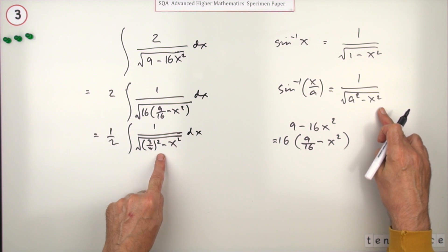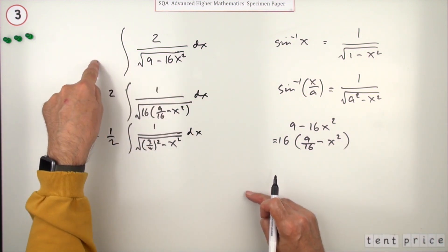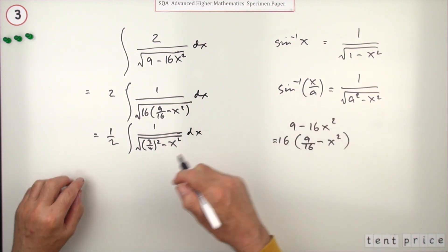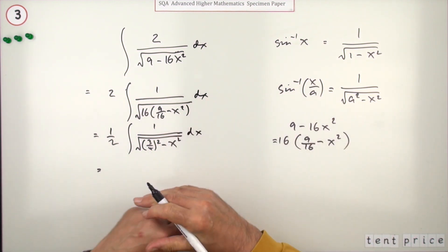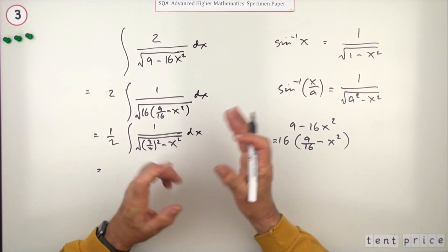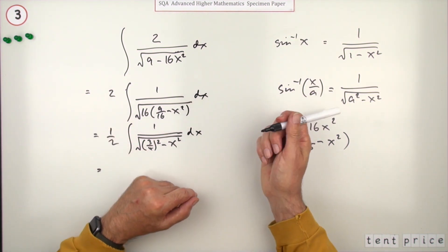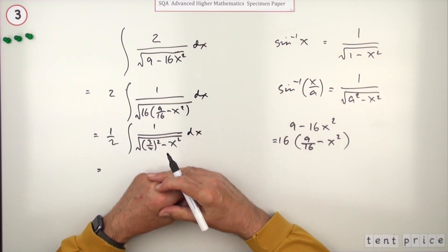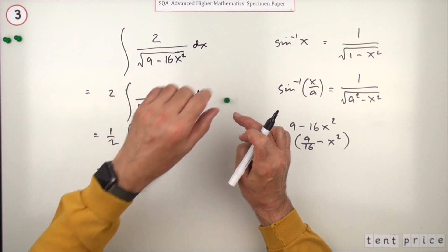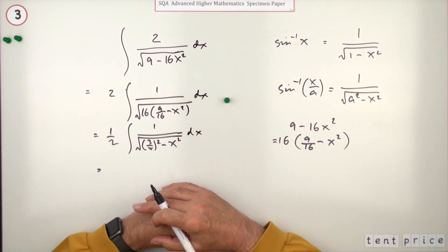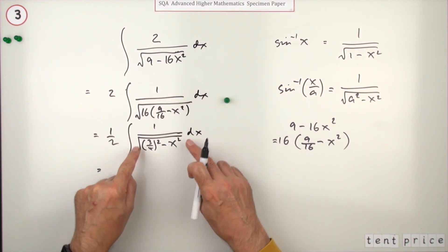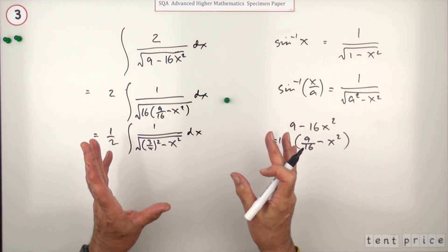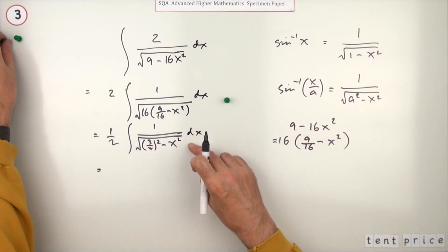Just pull out the 16, may as well take the 2 out while you're at it, and you're left with this. Now you just follow that pattern. How are the marks allocated? They were allocated as: identify the standard integral you were aiming for, the next mark is for actually getting this in the form of that standard integral that you know.